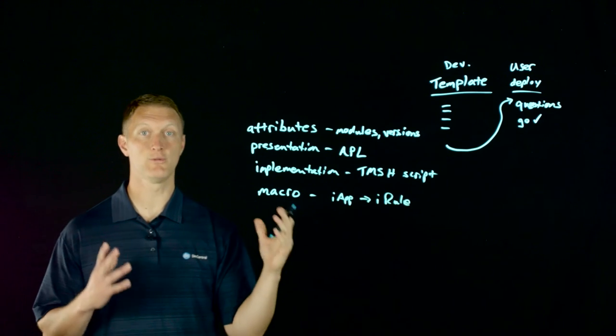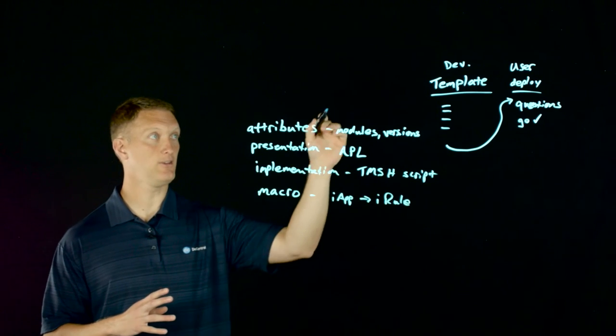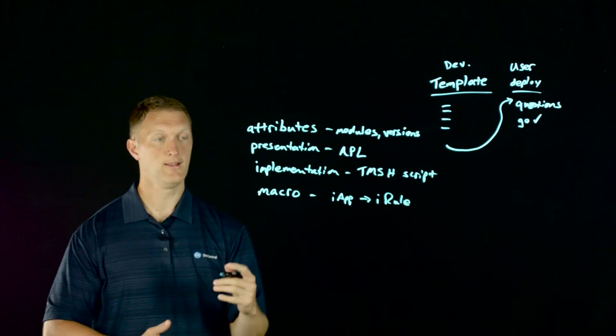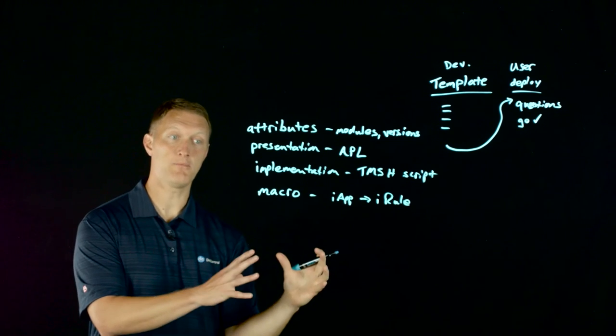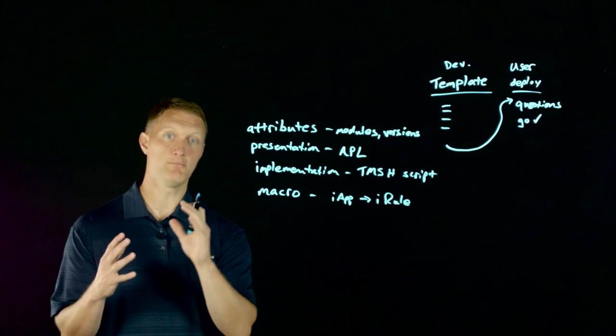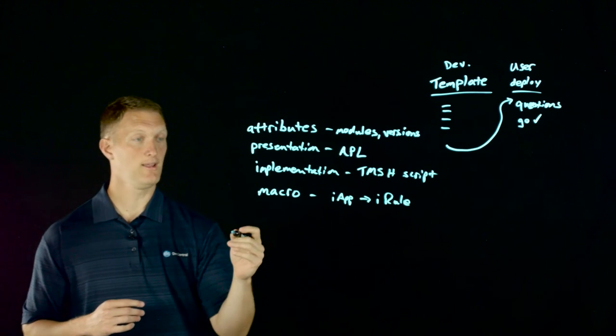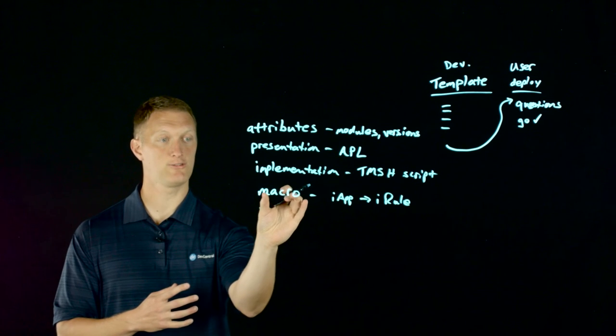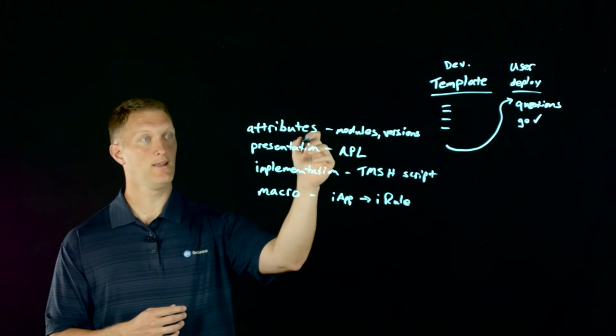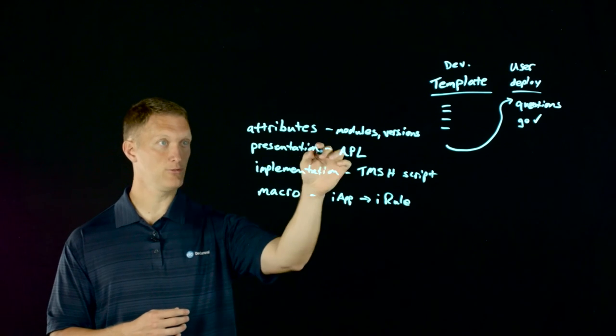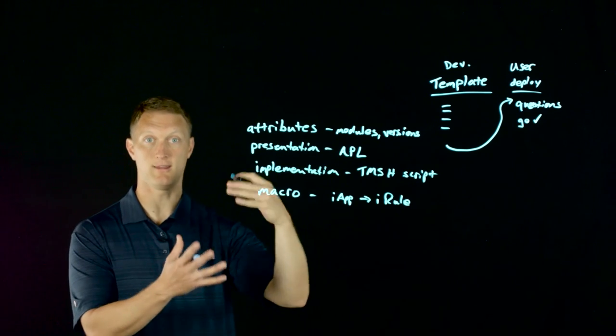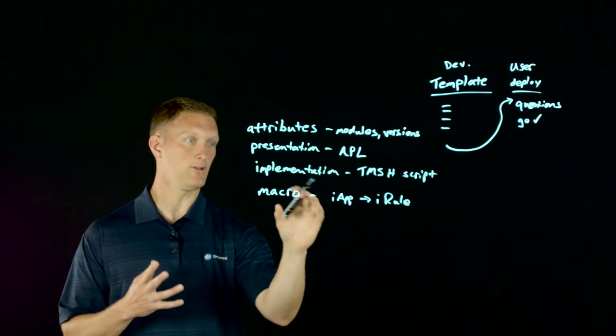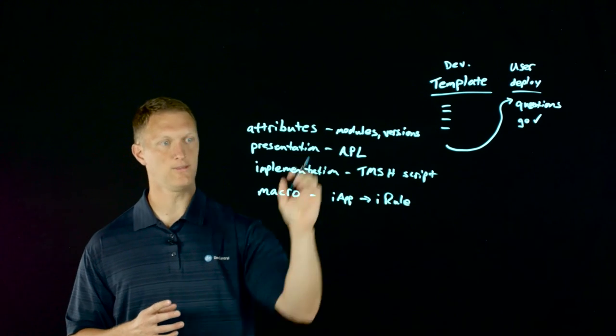One of the really cool things about an iApp is that as the user answers the different questions that you pose to them, the iApp itself will automatically create iRules as needed based on the user's answers. This macro section is where you actually build all of that out. You can take the answers from the user in the presentation and the implementation as you build out the configuration objects, and you can literally start to create iRules based on the answers.